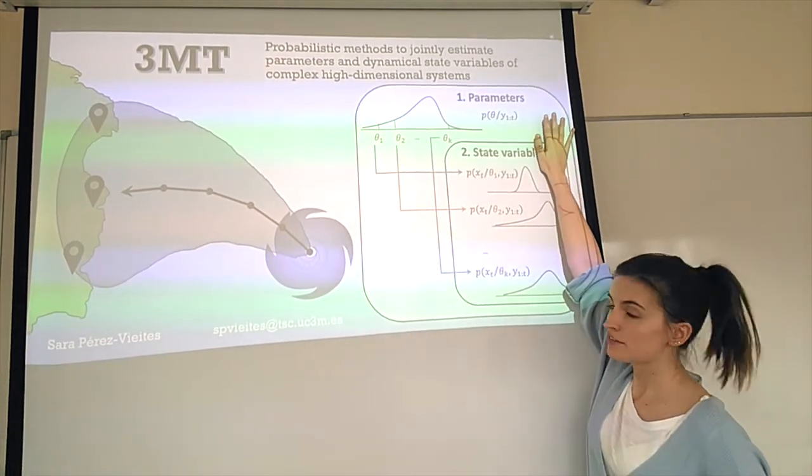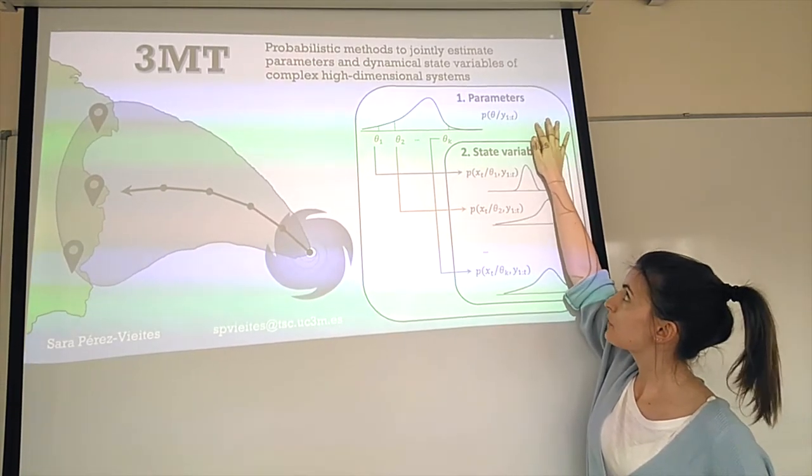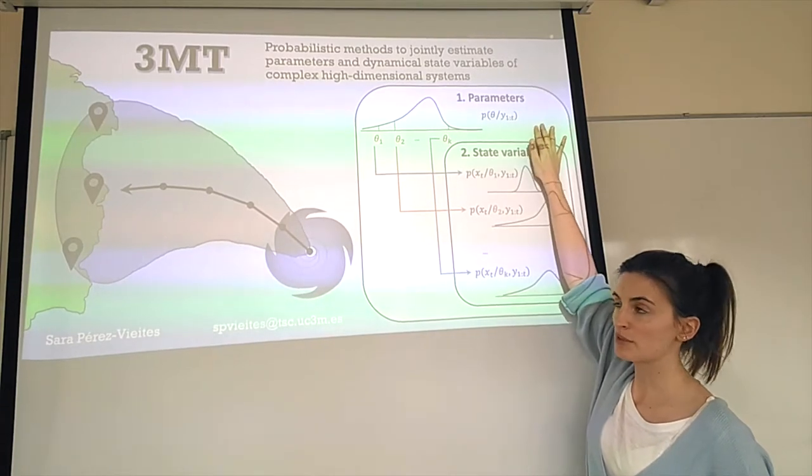In the first layer, this one, we have a grid-based scheme that approximates the posterior probability distribution of the parameters.